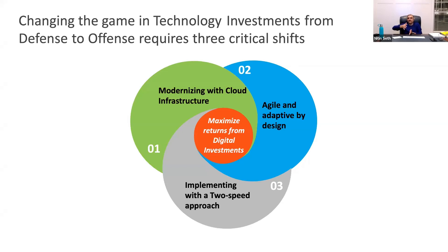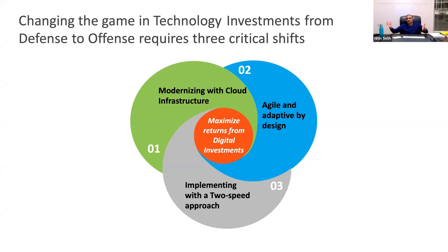Speed two is using successive agile cycles of implementation to build out the full stack, full infrastructure, and full architecture. Use cases are a necessary starting point but they are not enough — you do need the full stack. The key in this two-speed approach is how you connect speed one and speed two.